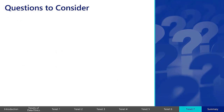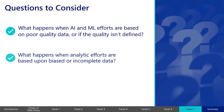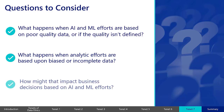Here are some questions to consider as you work with data. What happens when artificial intelligence and machine learning efforts are based on poor quality data, or if the quality of the data isn't defined at all? What happens when the efforts are based upon biased or incomplete data? How might that impact business decisions based on artificial intelligence and machine learning efforts?